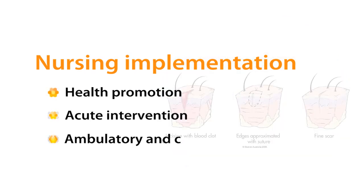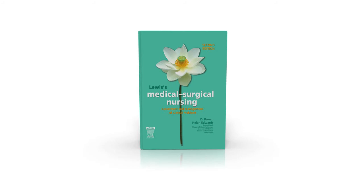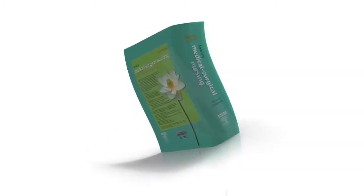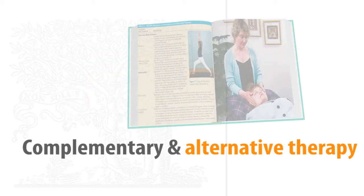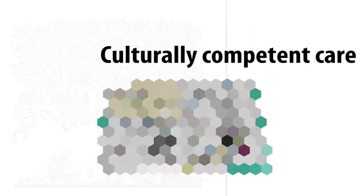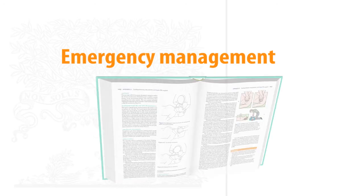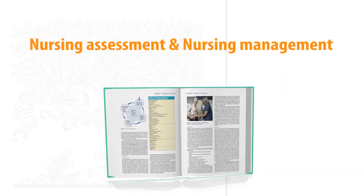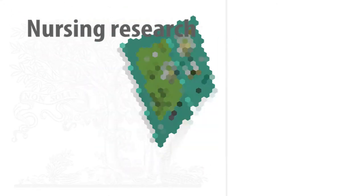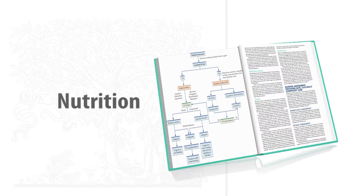Nursing implementation is organised by health promotion, acute intervention, and ambulatory and community home care. Themes throughout the text include common assessment abnormalities, complementary and alternative therapy, culturally competent care, emergency management, and gerontology.